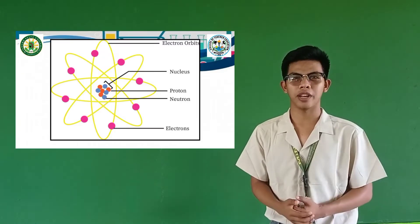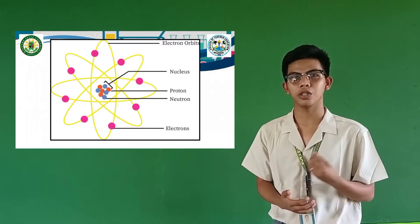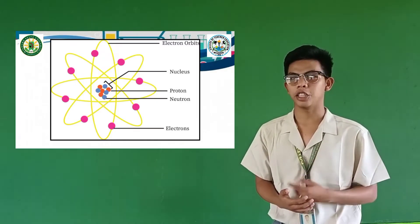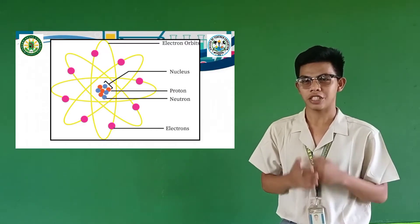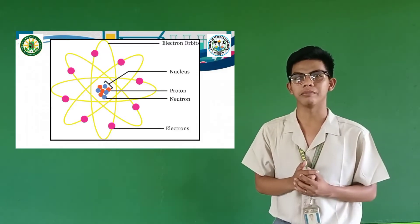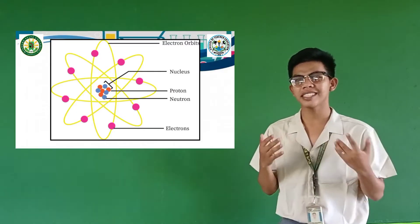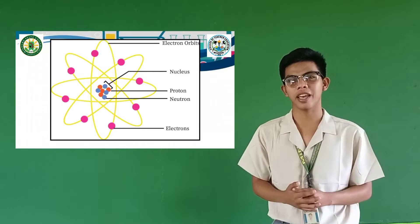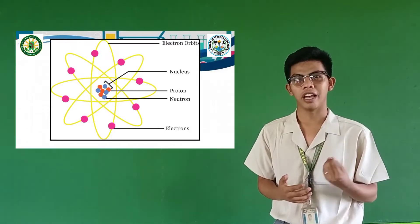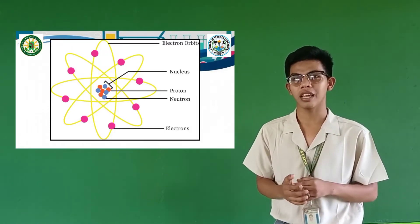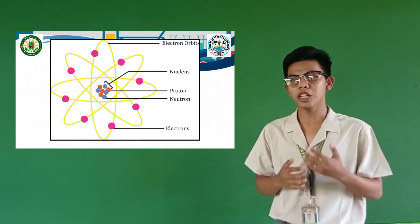We now have the structure of an atom. Inside the nucleus is the neutron and the proton, and outside the nucleus is the electron. Is it clear to everyone? Very good! What is inside the atom once again? The proton and the neutron, and outside the nucleus is the electron. Very good!